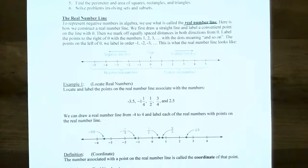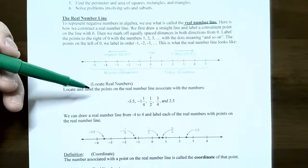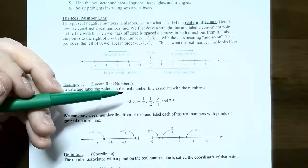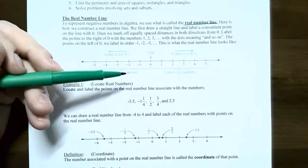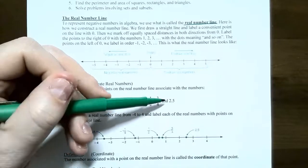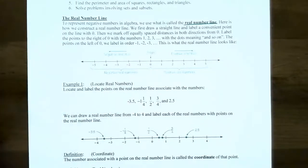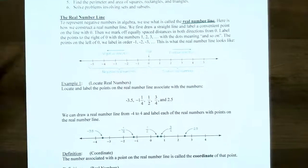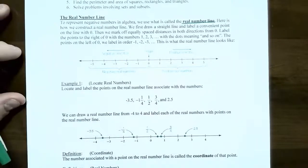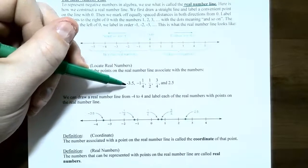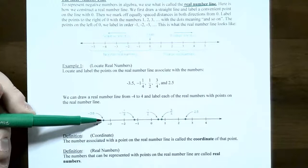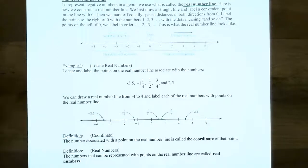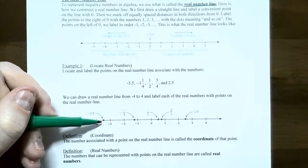In example one, we're going to locate real numbers on a real number line. We need to locate and label: negative 3.5, negative 1 and 1 fourth (or negative 5 fourths), 1 half, 3 quarters, and 2.5. I'll draw a number line going between negative 4 and positive 4. Negative 3.5 is halfway between negative 3 and negative 4, so it has its own unique location on the number line and is labeled as negative 3.5.